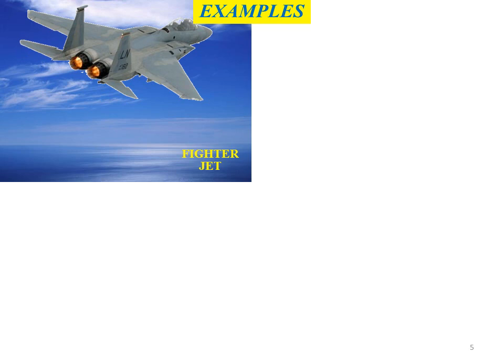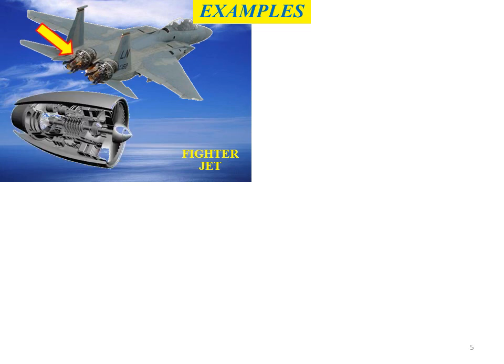Here are examples of systems that involve turbo machines. First, a fighter jet — at the back of the fighter jet there are two engines, which are gas turbine engines. These consist of continuously flowing fluid, rotational movement of the blades, and energy transfer during the process — including a fan, compressor, and turbine.